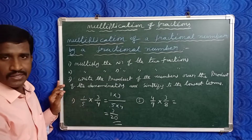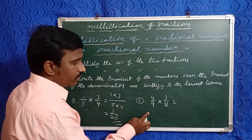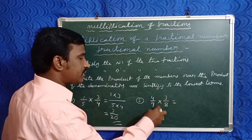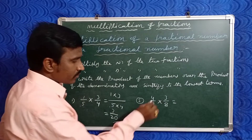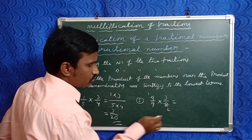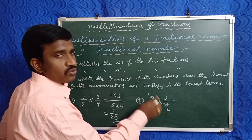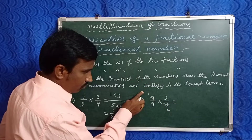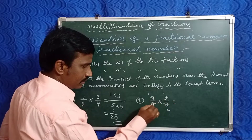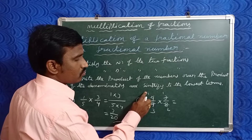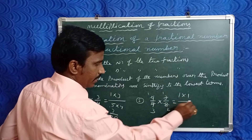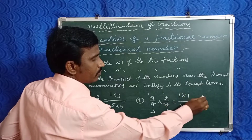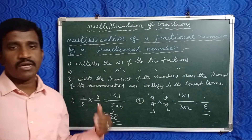Now check the record example: four by nine into three by eight. The numerators are one and one, so one into one by denominators three and two, so three into two. One into one means one, three twos are six. So the answer is one by six. This is the multiplication of a fraction number by another fraction number.